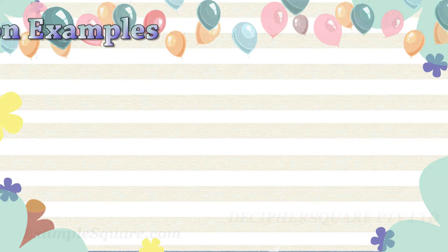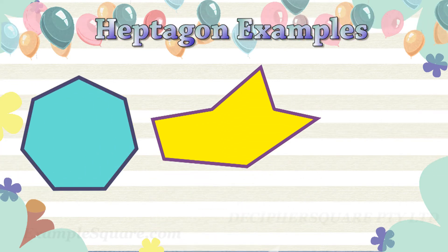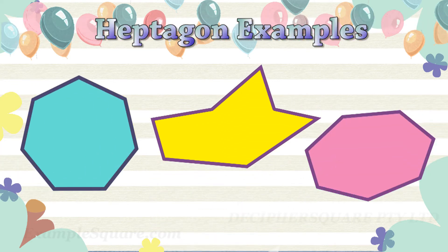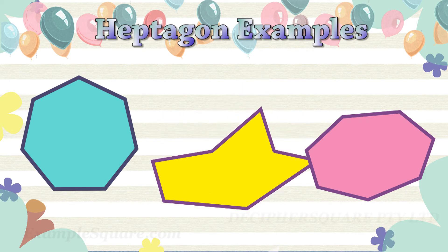These are some examples of heptagon shapes. If all seven sides of a heptagon are equal and all seven interior angles are equal, then it is a regular heptagon. Otherwise, it is an irregular heptagon.